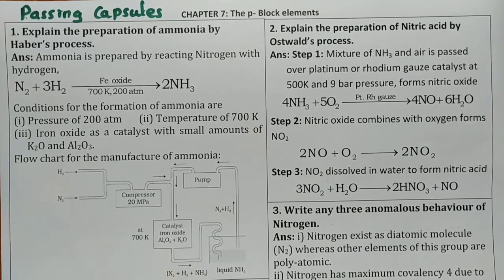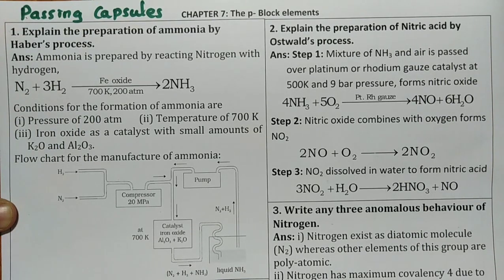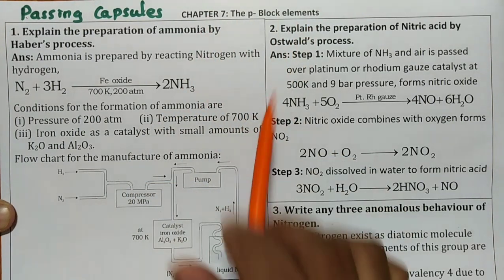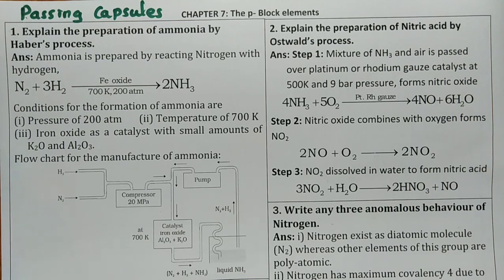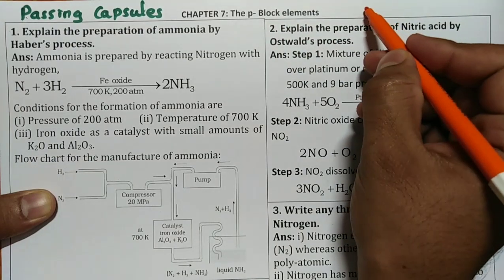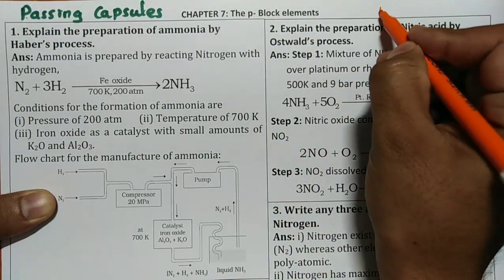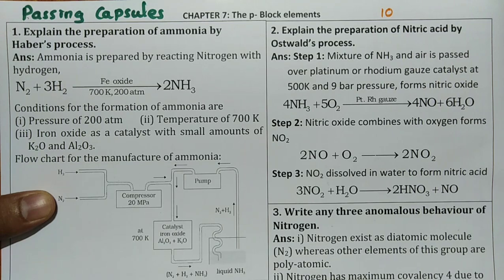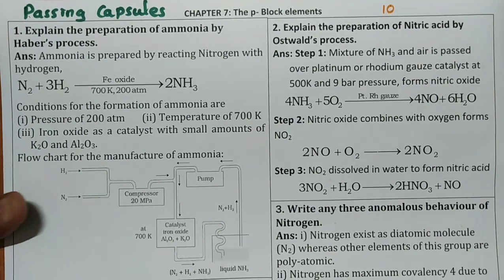If you want that material then you can join WhatsApp or Telegram group. This chapter P-Block Elements is a vast chapter but here I have considered only important concepts because there will be more number of options in the three marks section. So from this P-Block elements, total number of marks they are going to ask is 10. So three marks three question and one mark one question. One mark question will be only on the group 18 elements.